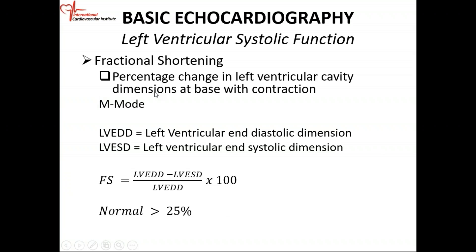Using M-mode, we pass a cursor through the heart. With M-mode, a normal fractional shortening is greater than 25%. The formula is: left ventricular end-diastolic dimension minus left ventricular end-systolic dimension, divided by left ventricular end-diastolic dimension, multiplied by 100.